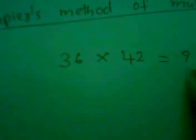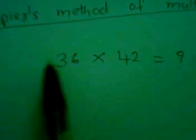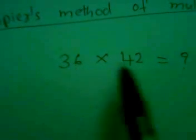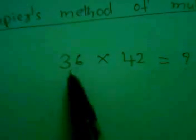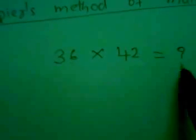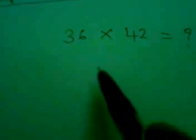By the APS method we are going to find the value of 36 into 42, the product of 36 into 42. What will be the answer? Let us see the method how it will work out.